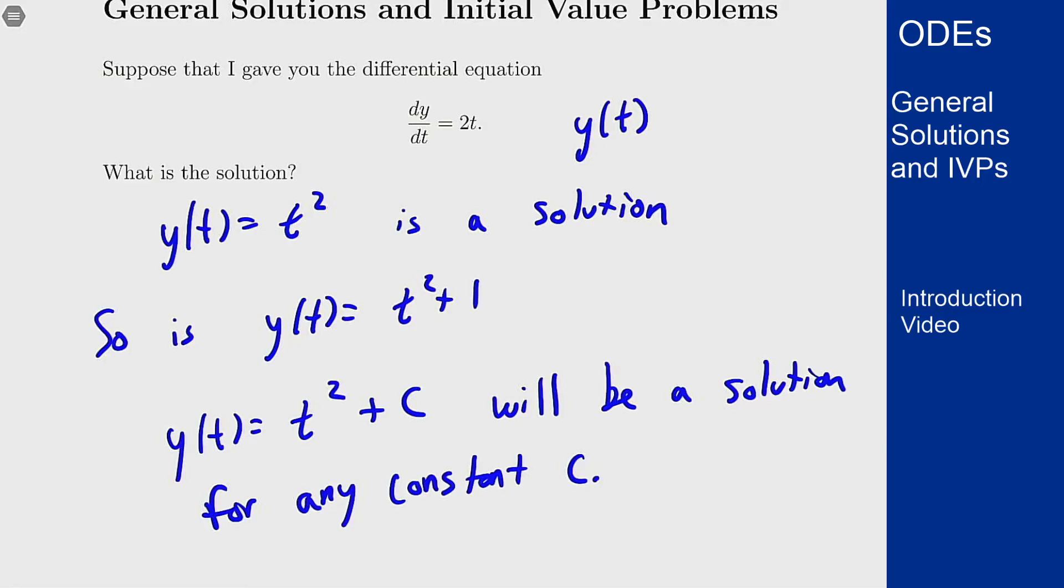The constant will just go away when we take the derivative so it's not going to affect my final answer. So a solution of this form with an unknown constant c in it is what's called a general solution to a differential equation.